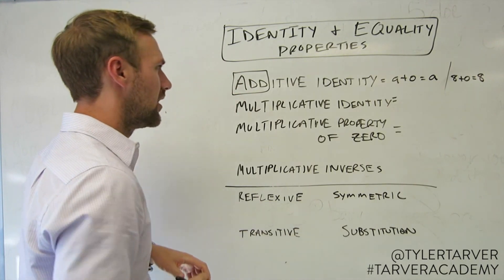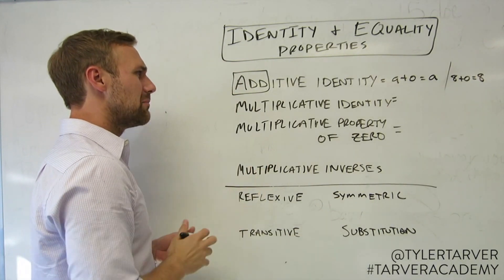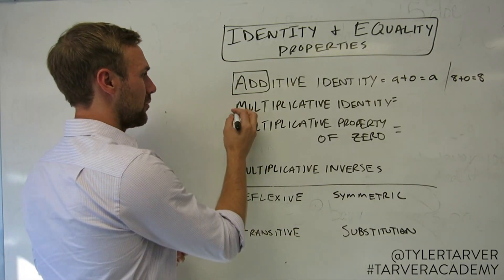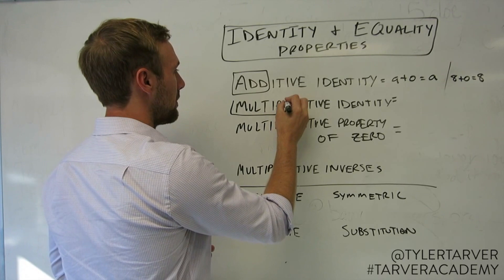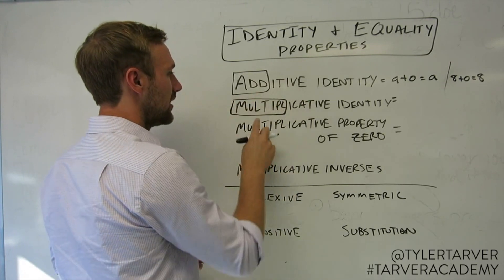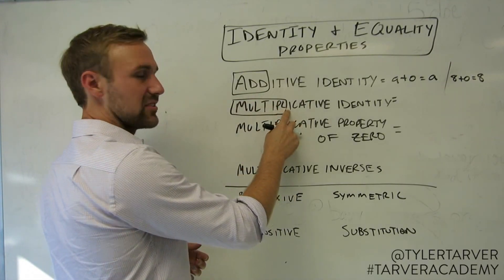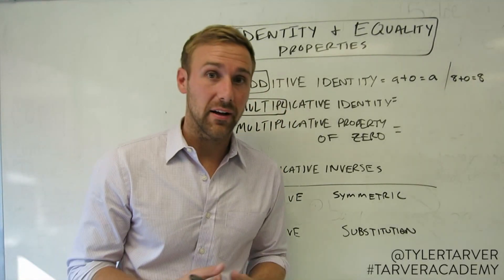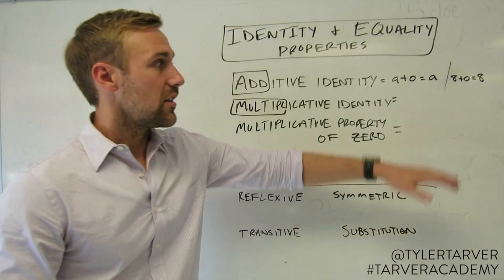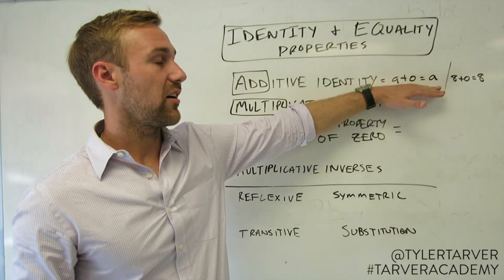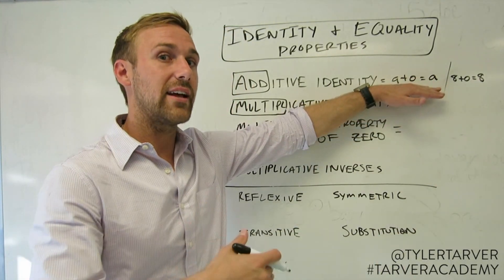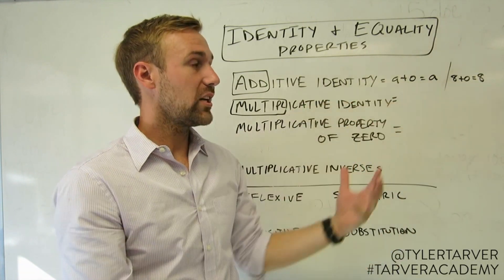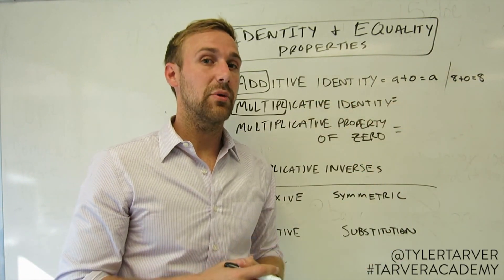Now you're thinking to yourself, what's the multiplicative identity property? Well, it sounds a lot like multiply — if you take that 'I' and say it weird, it's multiply. Based off of this one right here, where we know we're adding zero and we're keeping it as the same number, what can you guess this is going to be?